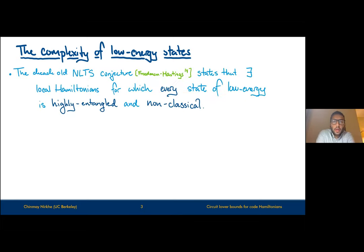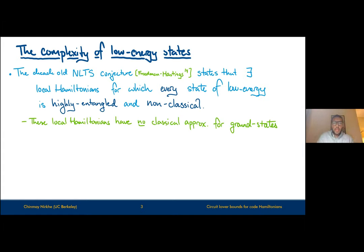The best understanding of the complexity of low energy states was formulated in a conjecture almost a decade old called the NLTS conjecture by Friedman and Hastings, which states that there are local Hamiltonians for which every state of low energy is highly entangled and non-classical. This implies that these local Hamiltonians have no classical approximation for ground states — they are truly quantum, and understanding the ground state energy even to a nice precision cannot be done with any classical approximation.